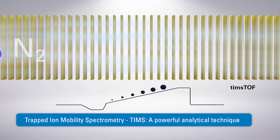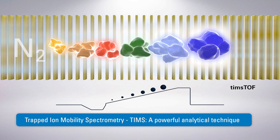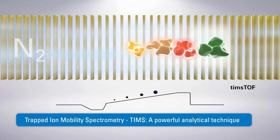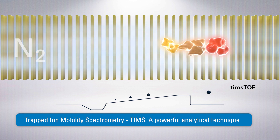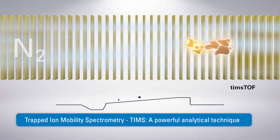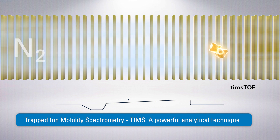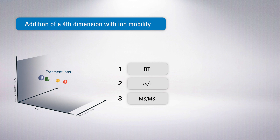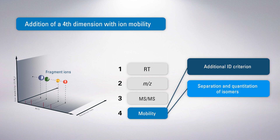Discover Bruker's TIMS-TOF technique that combines trapped ion mobility spectrometry (TIMS) and ultra-high-performance Q-TOF mass spectrometry in a unique instrument platform. Alongside retention time, molecular weight, isotope pattern, and fragment ions, ion mobility and CCS values augment Target Screener 4D's capabilities.